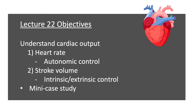Our objectives for today: we need to understand cardiac output as a product of heart rate and stroke volume. With heart rate we'll look at control by the autonomic nervous system. We'll compare that to stroke volume, where we look at both intrinsic and extrinsic control. We'll also have a little case study to finish up class.